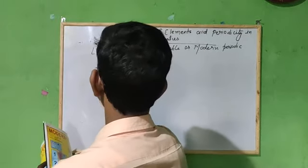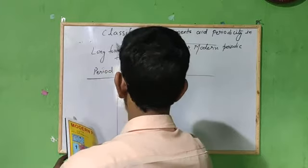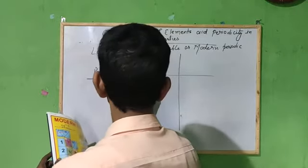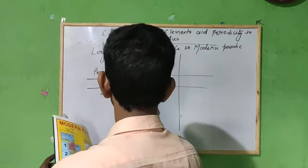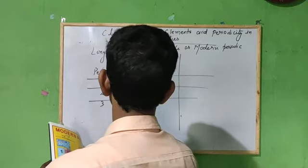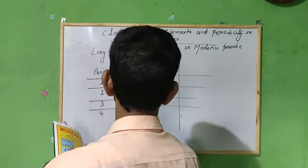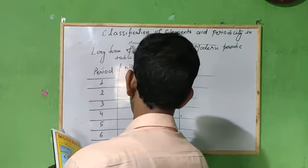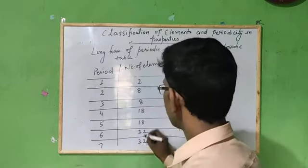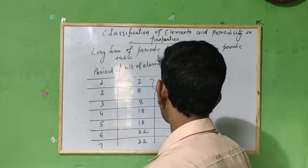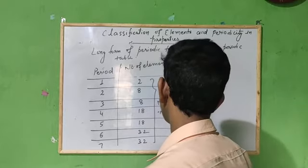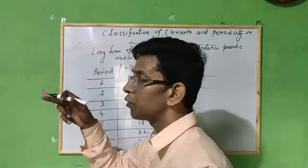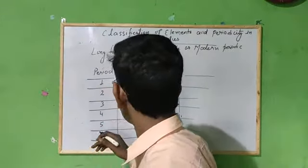Let me write this clearly. Period — number of elements: First period: 2 elements. Second period: 8 elements. Third period: 8 elements. Fourth period: 18 elements. Fifth period: 18 elements. Sixth period: 32 elements. Seventh period: 32 elements. The numbers 2, 8, 18, and 32 are called the magic numbers in the modern periodic table, because after these counts, repetition of physical and chemical properties occurs.